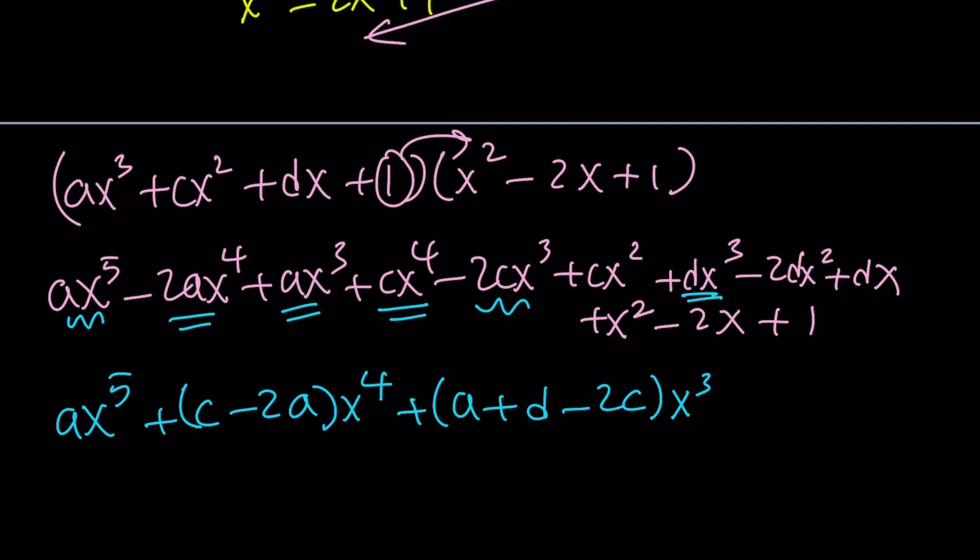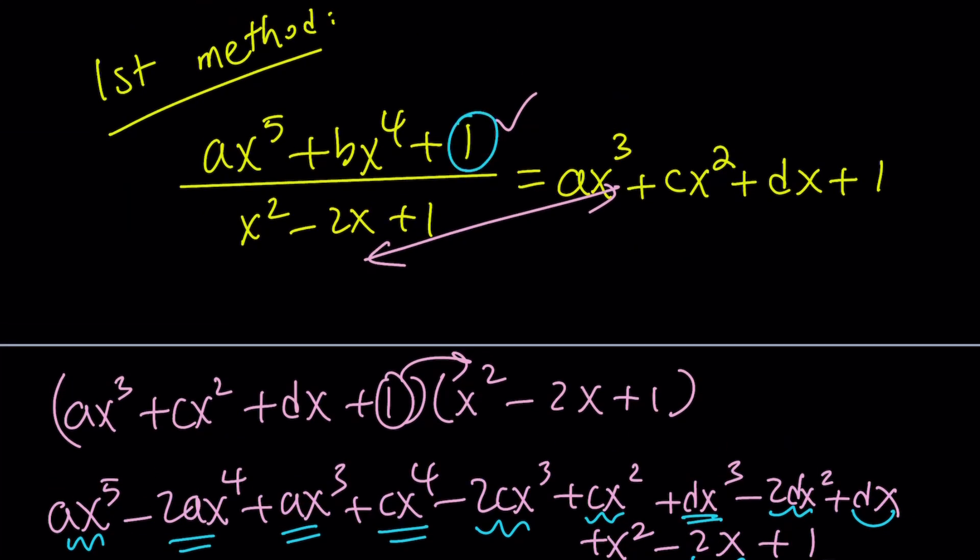And then I have an x squared. Underlining helps. Cx squared minus 2d. So that's c minus 2d plus 1. And I should have an x. That is just dx minus 2x. So that's going to be d minus 2 quantity x. And at the end, I have 1 by itself, because we only have a single constant here.